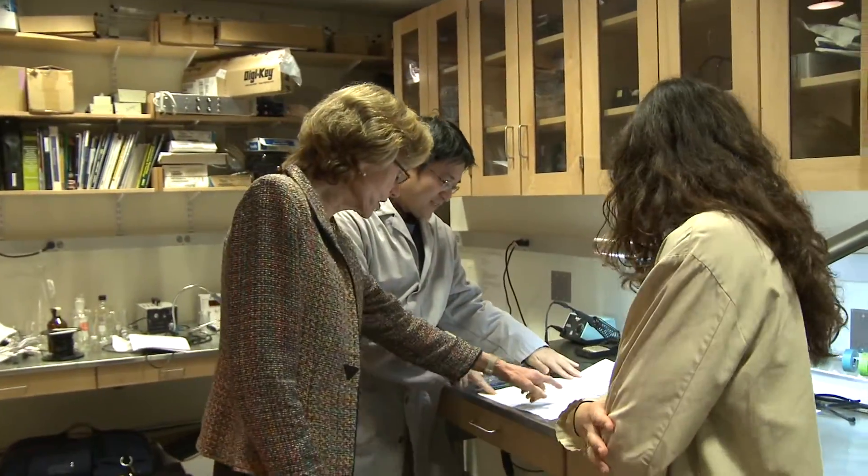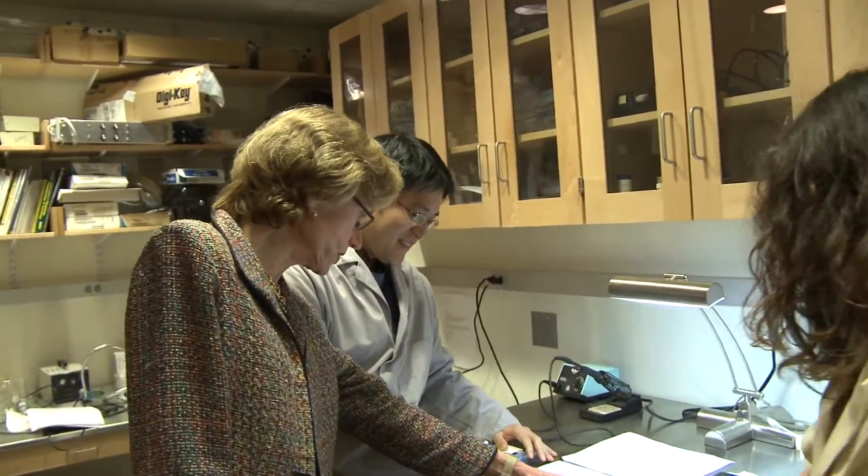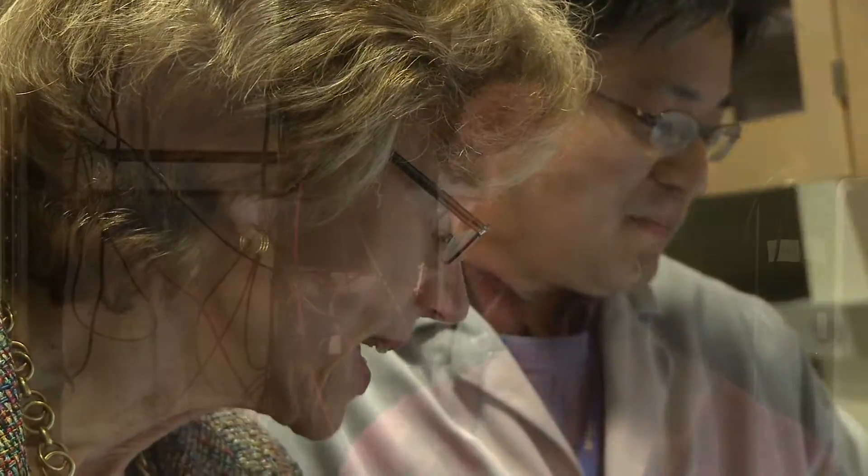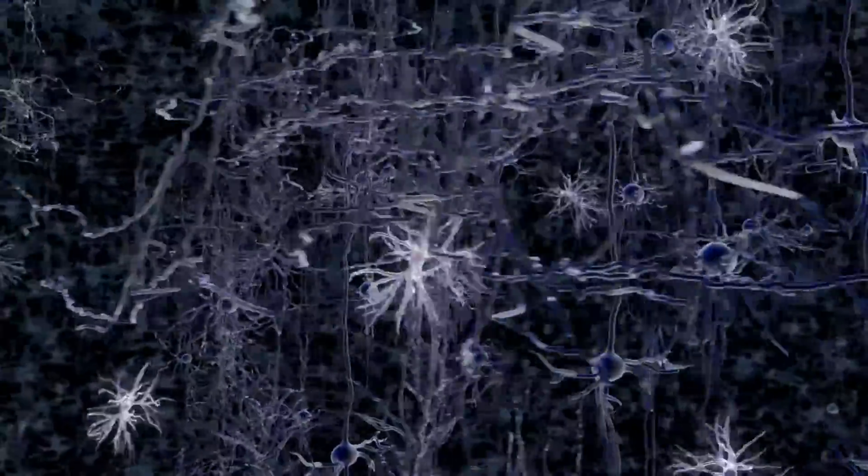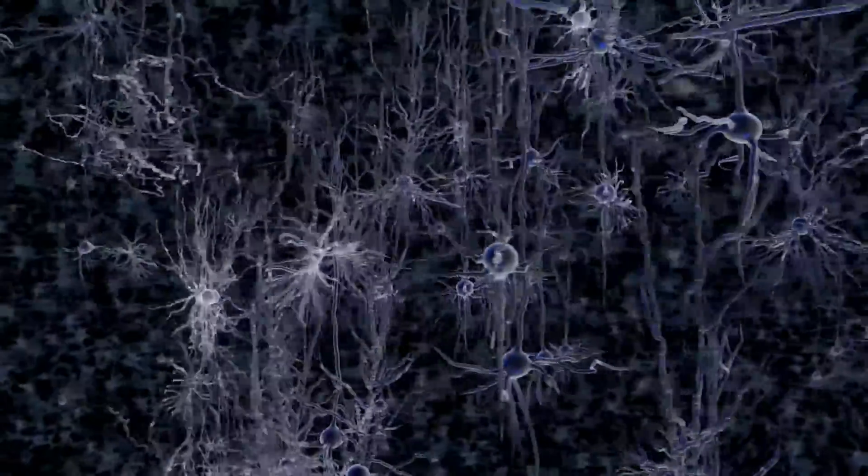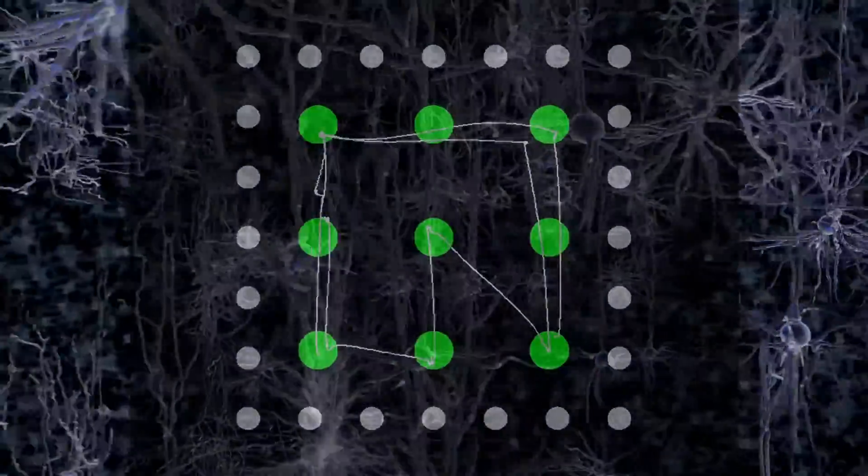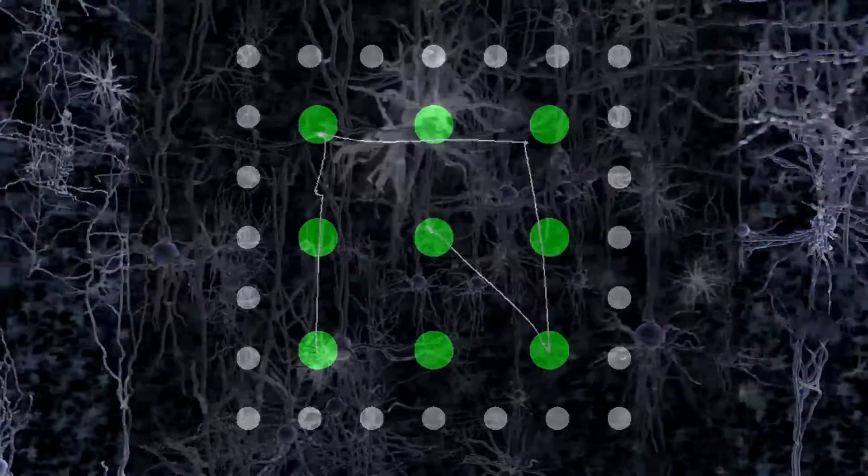Previous work in the lab had examined how monkeys do sequences of saccades that were instructed and that were over-learned. They found that there's this activity that comes at the beginning and at the end of the sequence, and we wanted to know if that was there from day one. What we found is that neurons in the striatum come to actually develop that activity, and as the habits of the animal are getting stronger, so too is that activity.